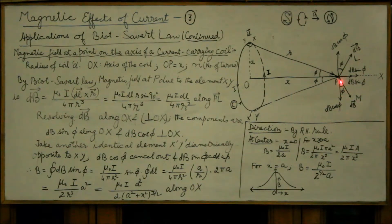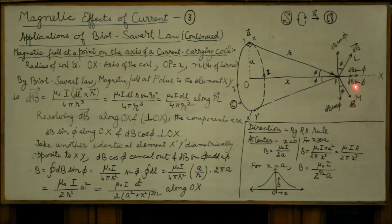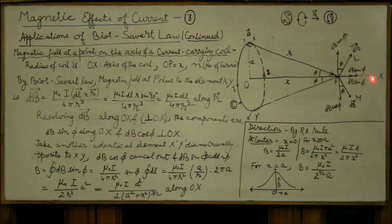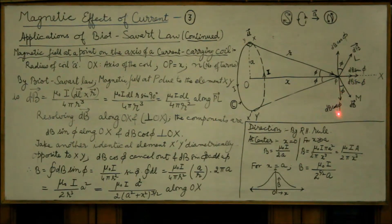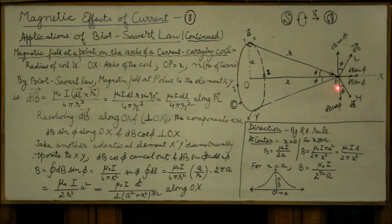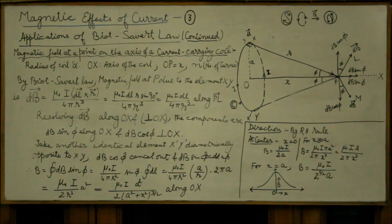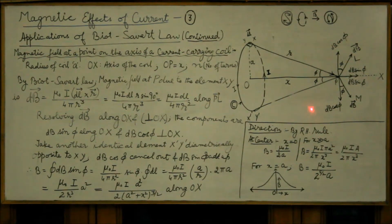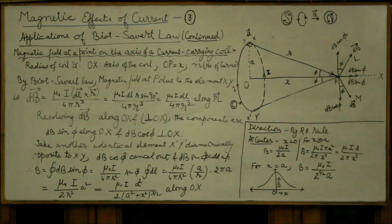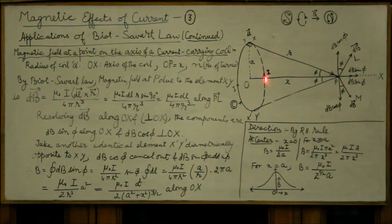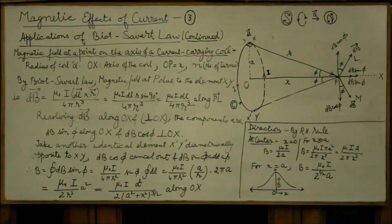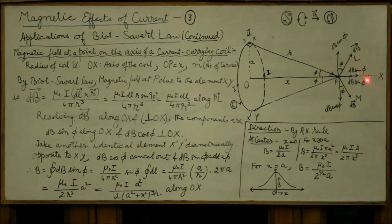Similarly, this field dB will have its component dB sin φ along axis and dB cos φ normal to the axis. As is clear from the diagram these components dB cos φ cancel out being equal and opposite whereas these components dB sin φ along the axis will have to be added up.